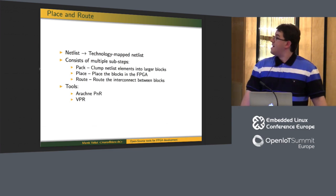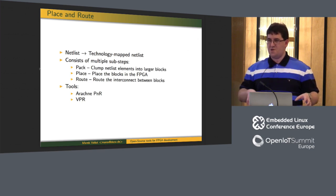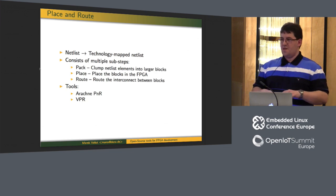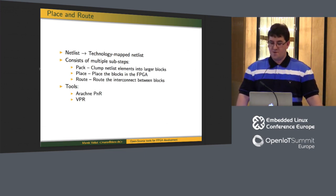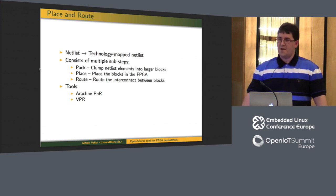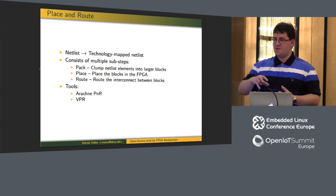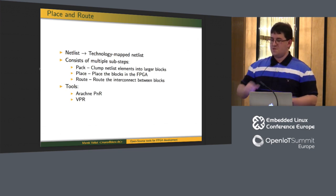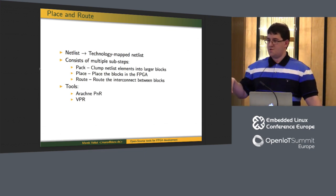Place and route: in this step you take the netlist and convert it into a technology map netlist. The knowledge of the target FPGA enters the picture here. It has multiple sub-steps: first, packing — logic that should be close together in the design is packed into Logic Array Block clusters to avoid long connections (since speed of light matters). Then placement computes where these clusters go in the final FPGA, and routing connects the interconnect between clusters.